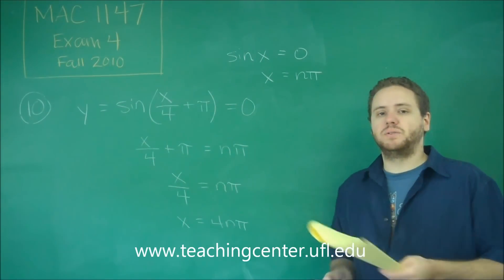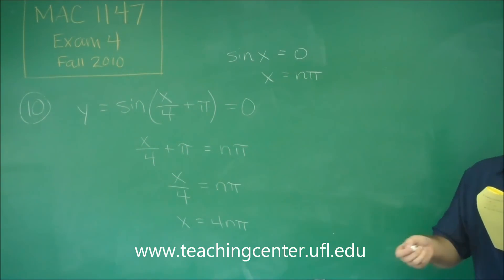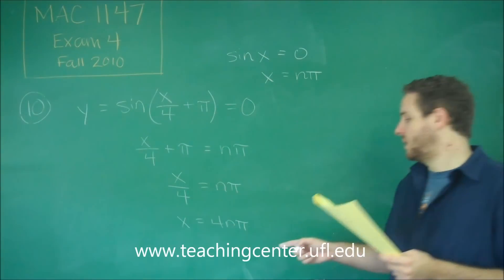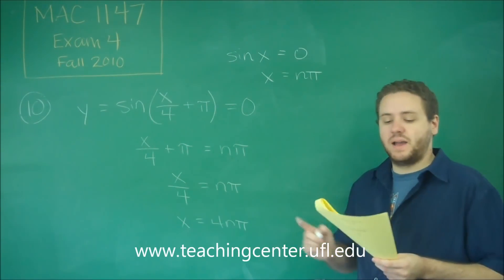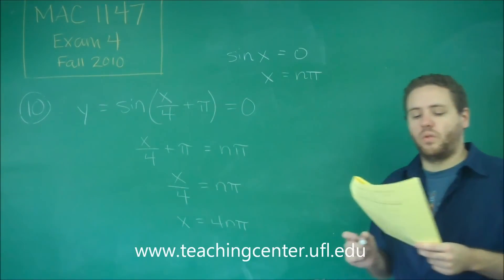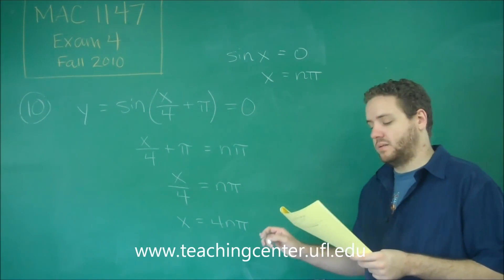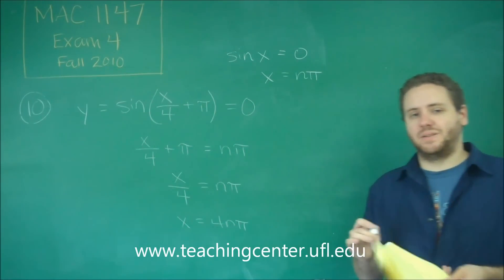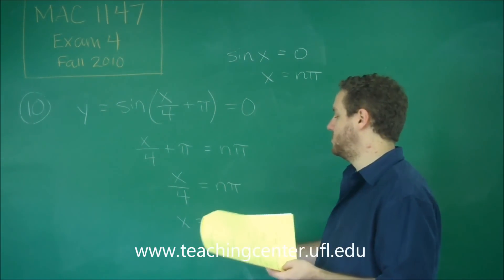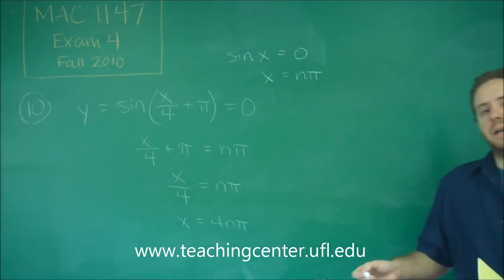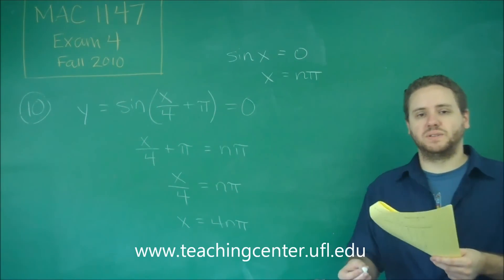If you plug in 0, that definitely has to be an answer, which leaves only choices C and D right away. If you plug in 1 and negative 1, you get 4pi and negative 4pi — that still includes both C and D. But C has other numbers that can't be valid. Plugging in 2 and negative 2 gives 8pi and negative 8pi, and the only choice that has all of these values is choice D.